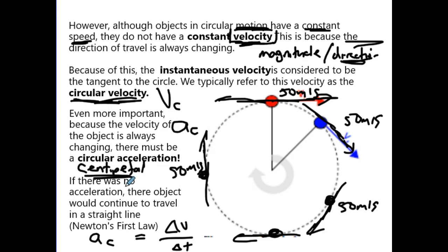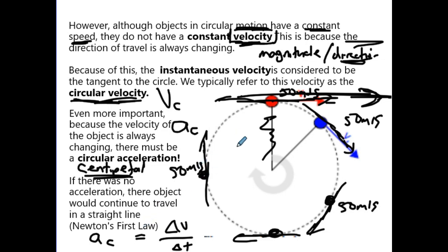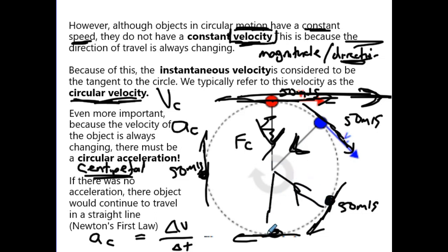One last point: if there is no acceleration, the object would travel in a straight line. Imagine you spin something around in a circle and the line snaps — the object would fly off at a tangent because of Newton's first law: objects in motion stay in motion. But we actually have a centripetal force — a circular force — and that force is constantly pulling the object towards the middle.